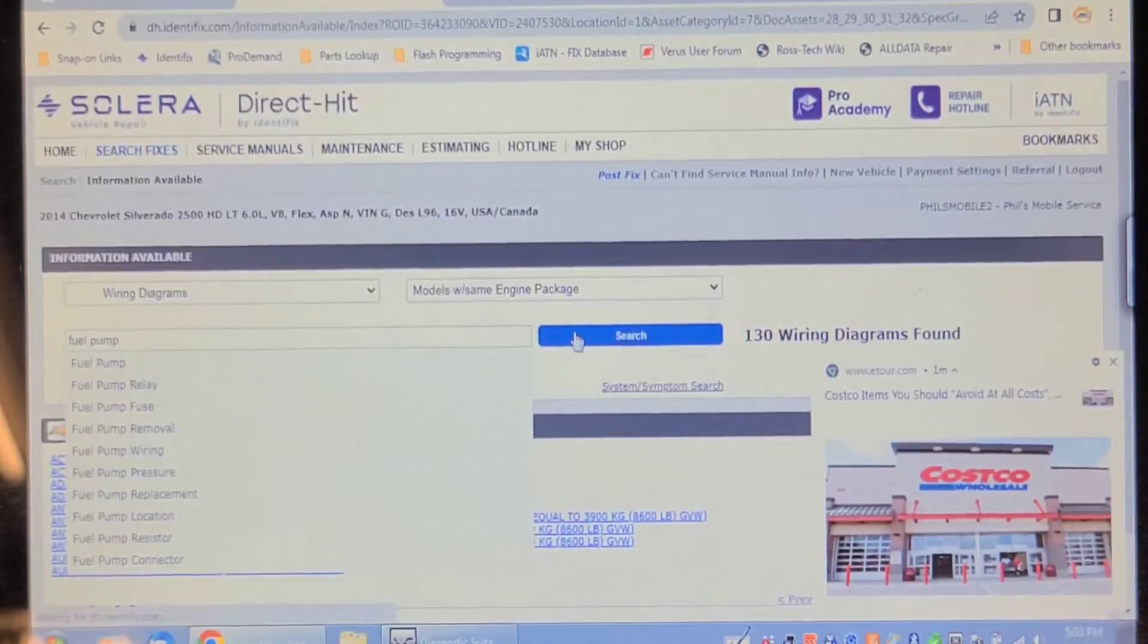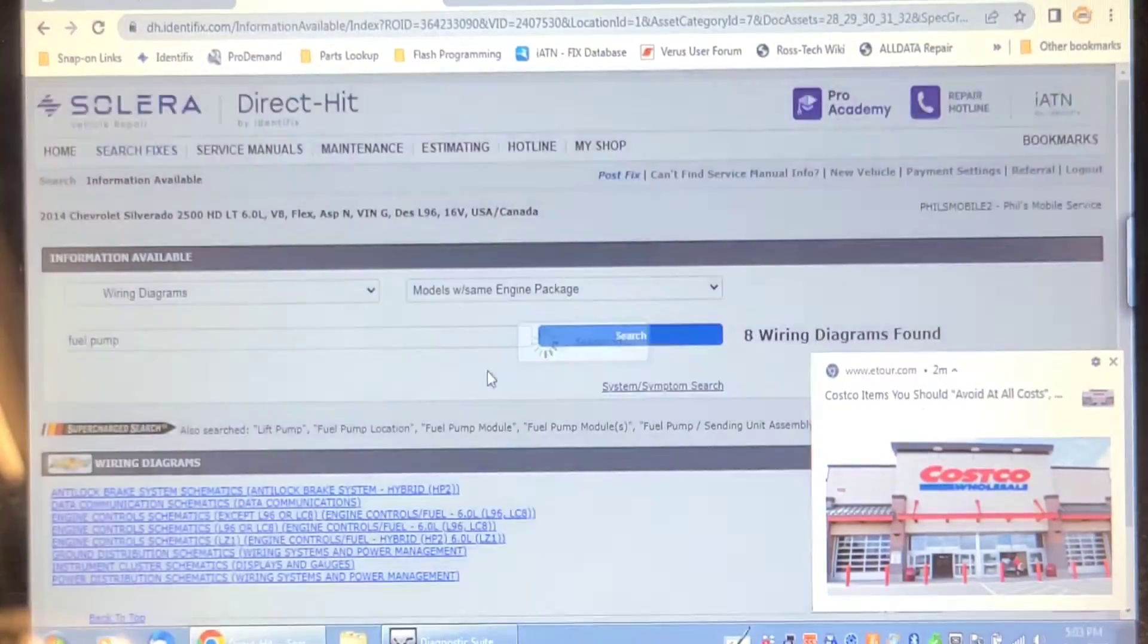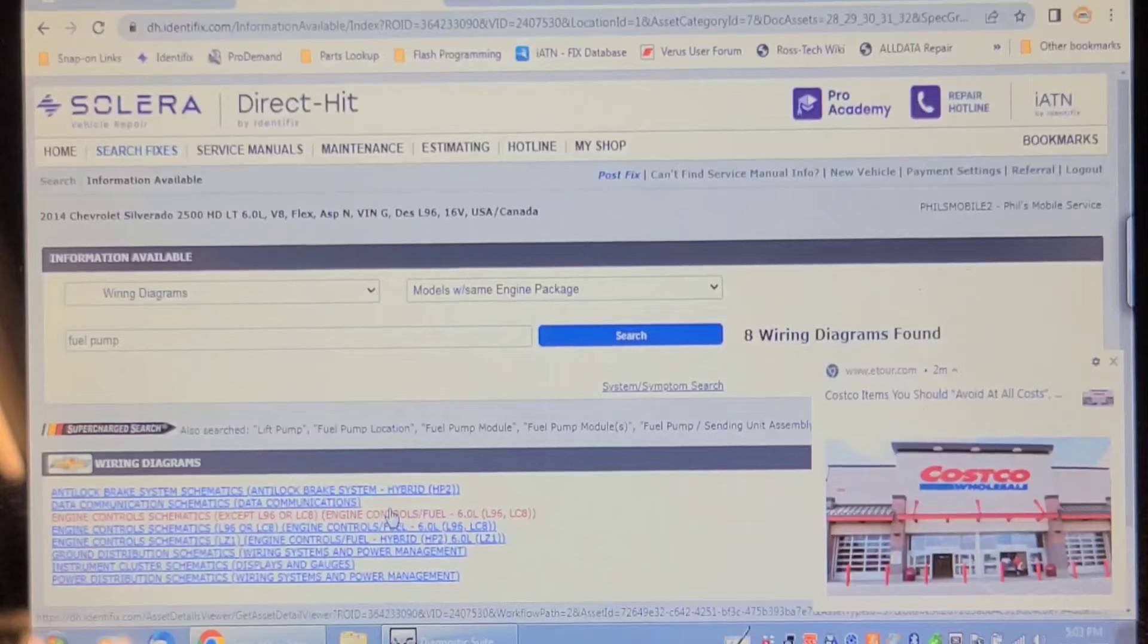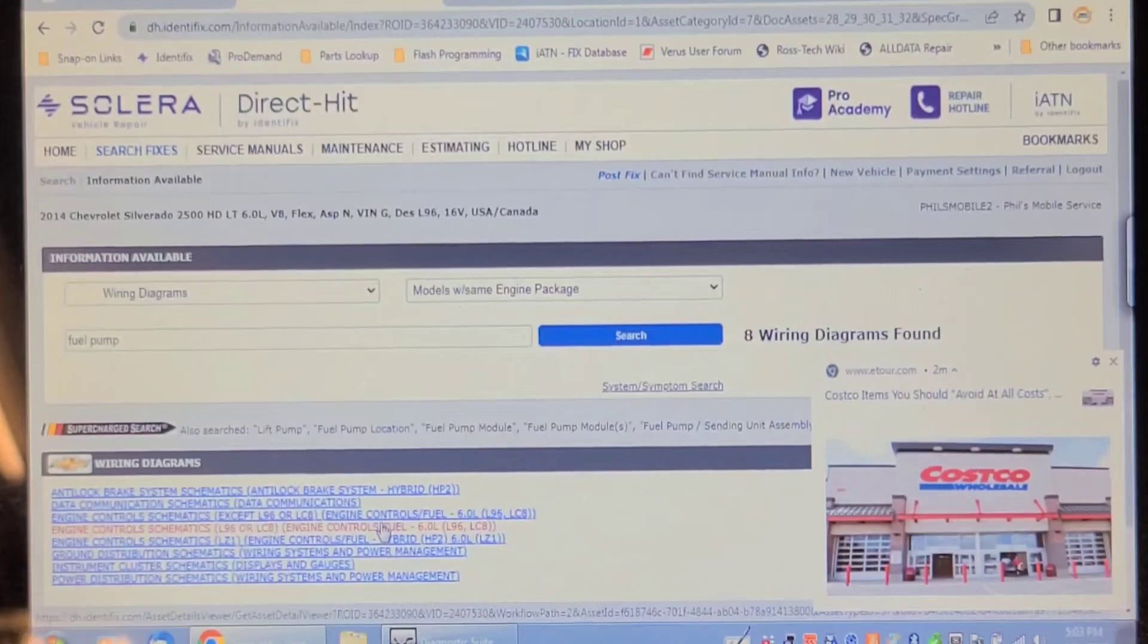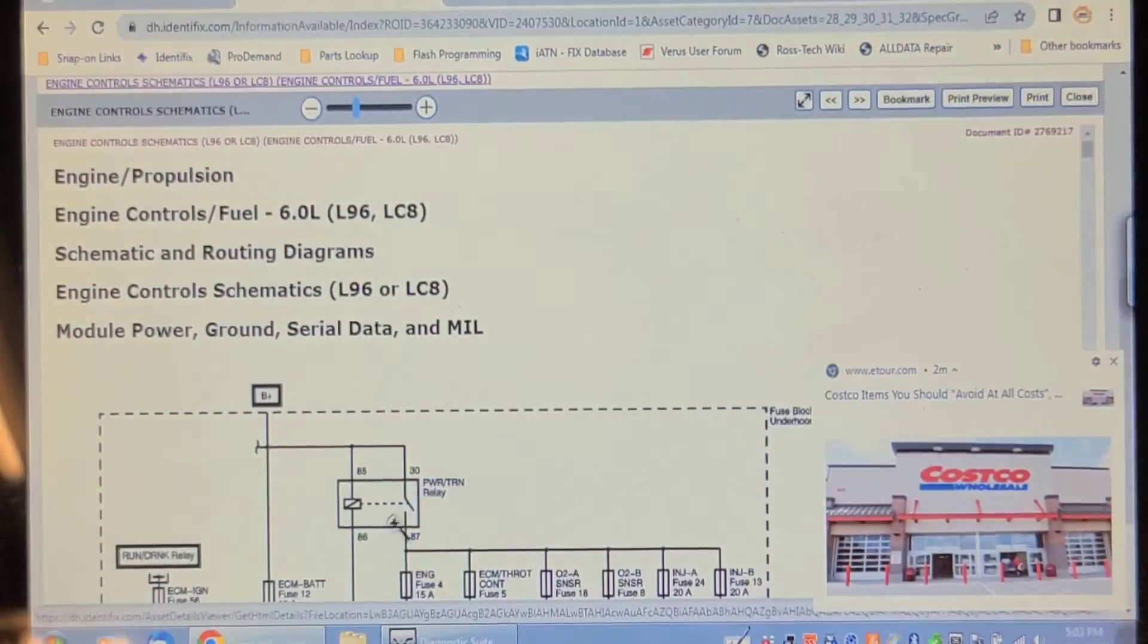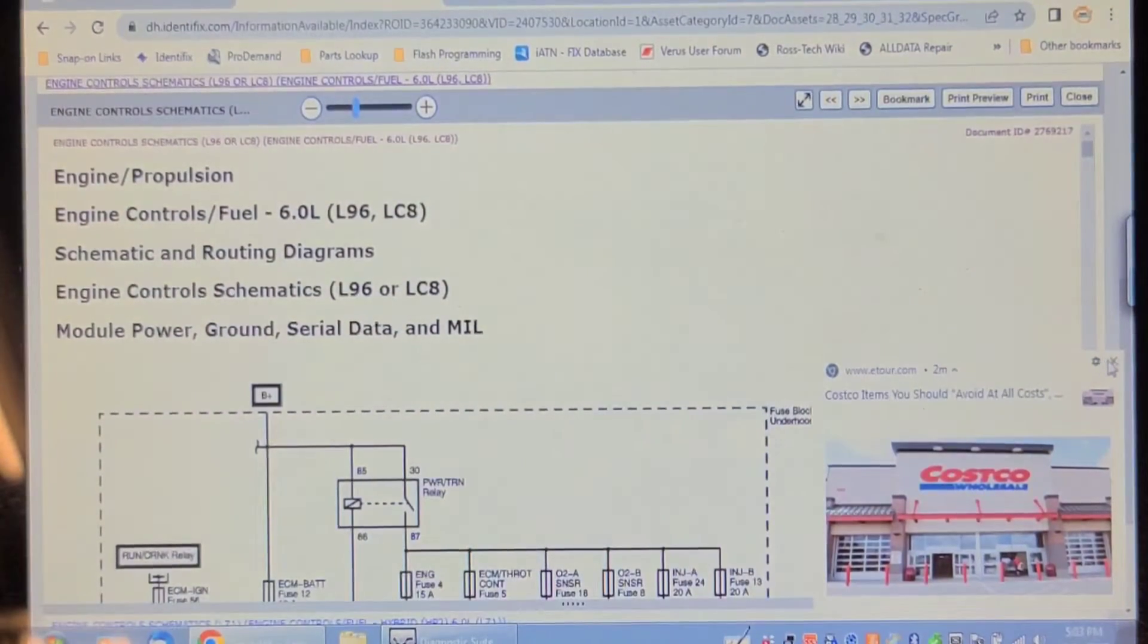If you ID it as a three-quarter ton it could come with the 5.3, 6.2, or 6 liter apparently. But if I go to the L96 engine or LC8, which is compressed natural gas, it shows this variation.